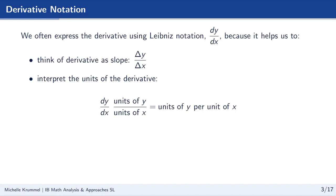Let's talk in more detail about Leibniz notation. We often express the derivative using the dy dx notation. It's helpful to remind us that derivative is slope — change in y over change in x, or dy over dx. The reason I really like Leibniz notation is because it's very helpful for interpreting the correct units for our derivative. When we describe the units, we include whatever the units are for the y variable, per whatever the units are for the x variable. So the units of the derivative are units of y per units of x.